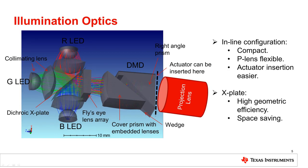This picture shows the optical layout of the illumination design. Light sources are RGB LEDs that have the same emitting size. Light from each LED is collected and collimated by two lenses. After collimation, RGB colors are combined to a common path by a dichroic X-plate. Following the X-plate is the lens array, which is to homogenize the light to create uniform illumination on the DMD.